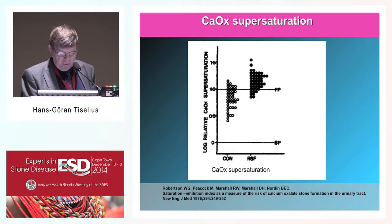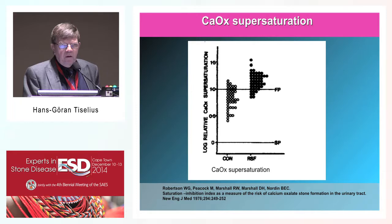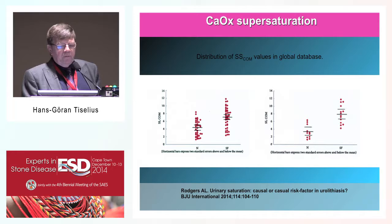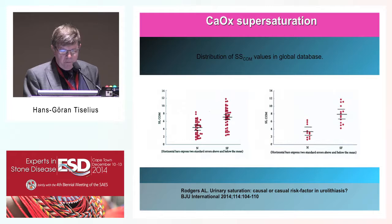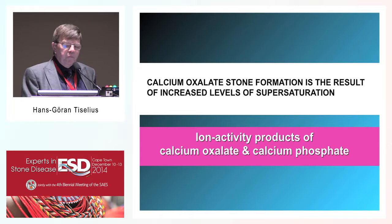It was thus very early demonstrated that there was higher supersaturation in recurrent stone formers compared to normal subjects, as has been discussed repeatedly during this meeting, although there was an overlap between the groups. Subsequently, there have been a number of reports in the literature showing a similar outcome, here summarized by Alan Rogers in a recent publication, also with an overlap between the groups. One conclusion drawn is that calcium oxalate stone formation is the result of increased levels of supersaturation.